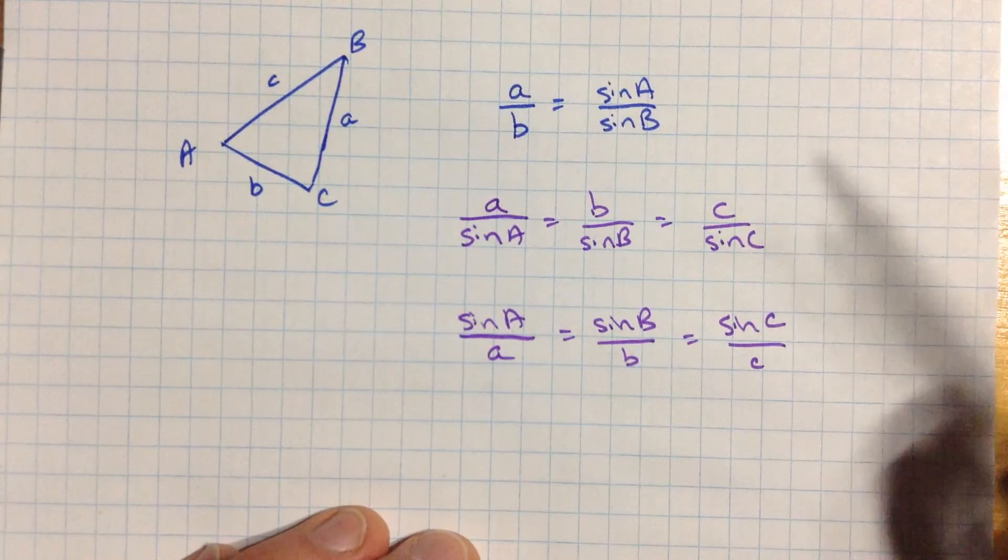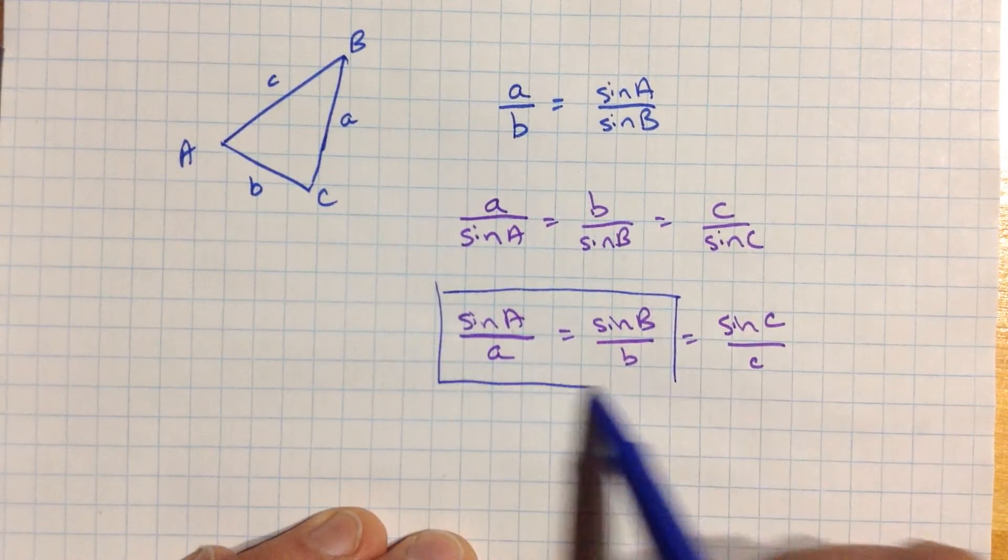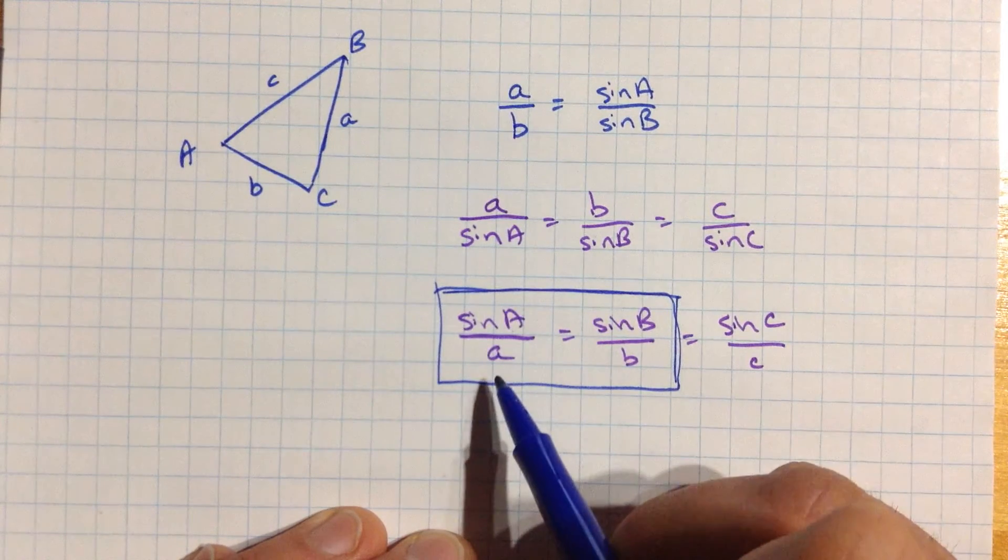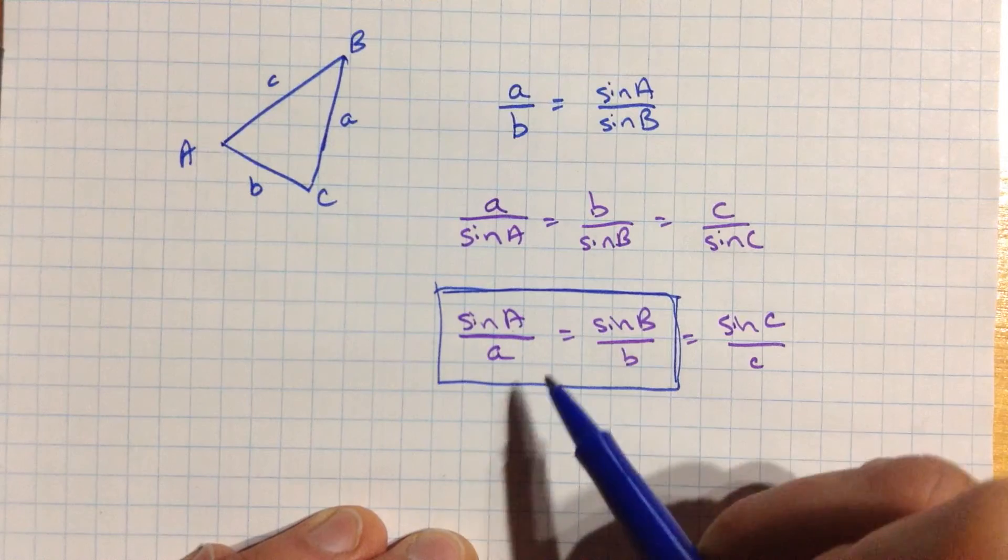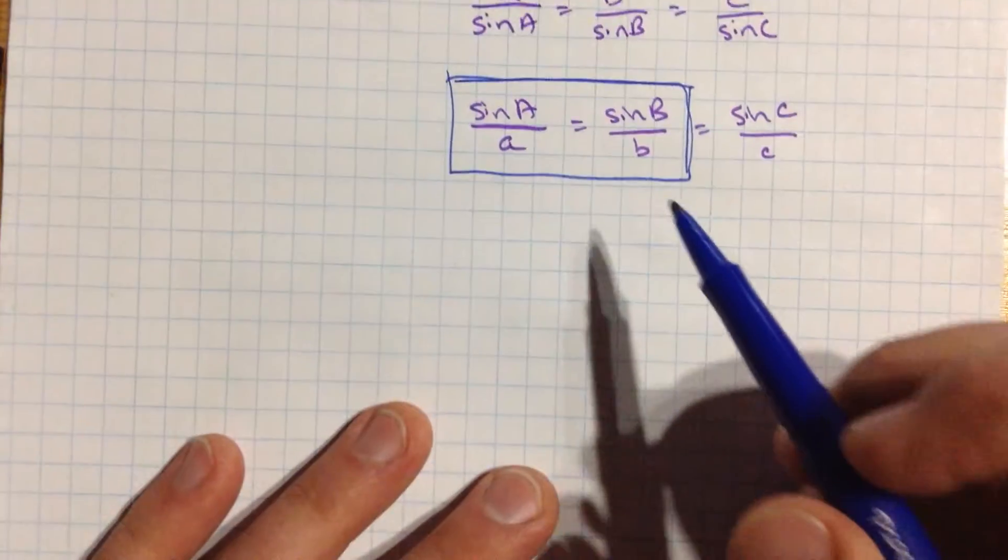What this means is if you know some part of your triangle, for example, if you knew three out of these four values, maybe you knew angle A and two sides like a and b, then you'd be able to find the remaining missing thing. Okay, so let's try it with an example.